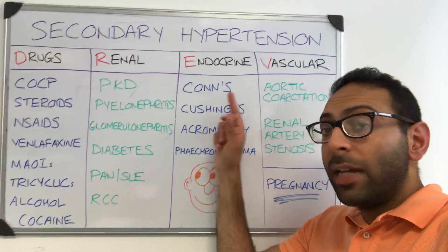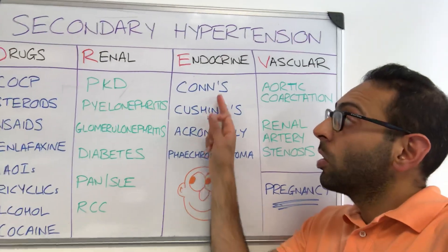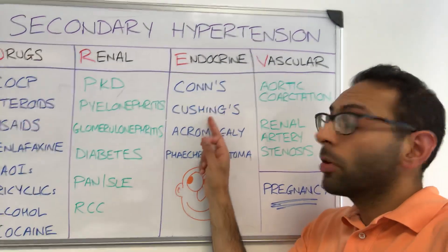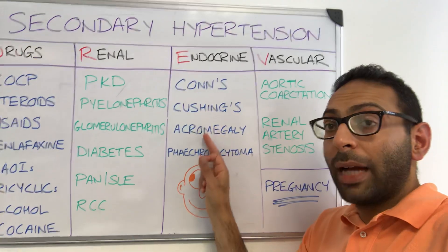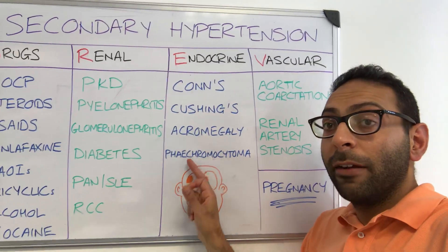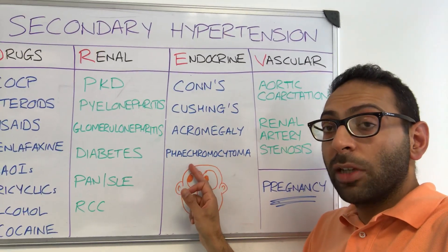E, thirdly, is endocrine: Conn's syndrome, Cushing's syndrome, acromegaly, phaeochromocytoma.